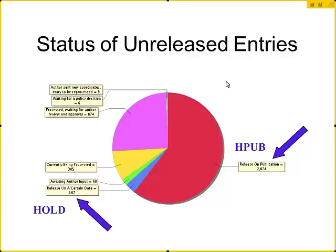The issue is, once you see a paper come out about a structure and you want to go look at that structure, you may find that it is on hold for at most a year past publication date. That is what this small slice of structures represents — they're on hold until a certain date. Most structures, though, are held until publication, and within a week or two of the article coming out, those coordinates will be publicly available. Those structures are under the classification HPUB.